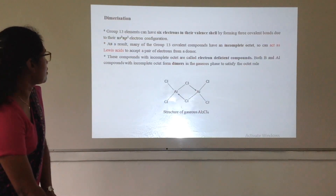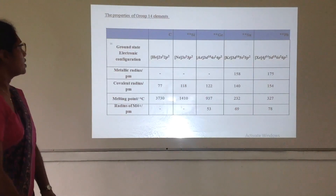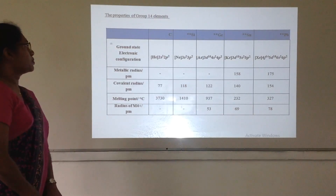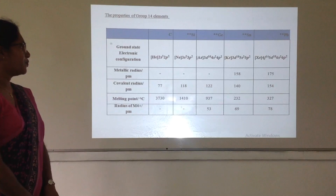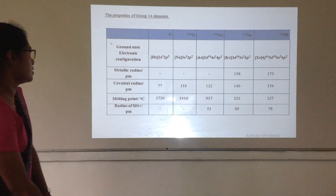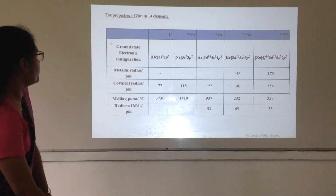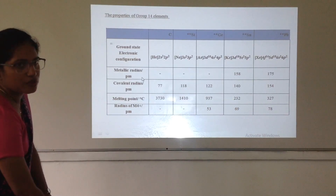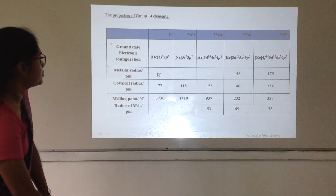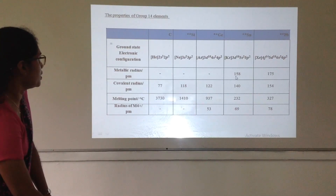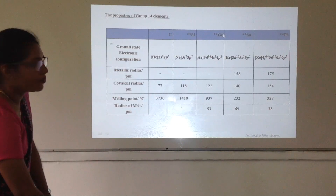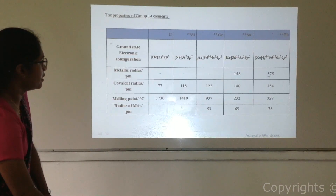Now we have to consider the properties of the Group 14 members. If we consider the metallic radius: when we go from top to bottom, only tin and lead show a metallic radius because the other three elements are not metals, so they don't have a metallic radius. The metallic radius increases going from top to bottom.